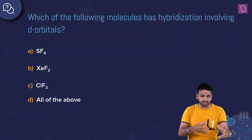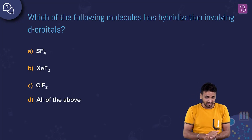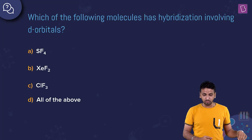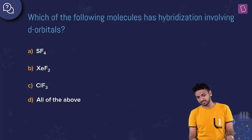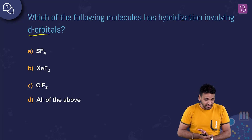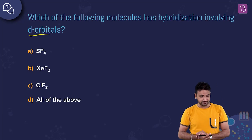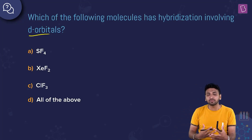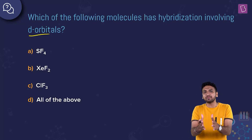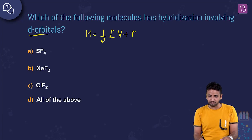We have a question from hybridization. Which of the following molecules has hybridization involving d orbitals? We are going to look for the hybridization of the central element, and we will calculate that with the formula: one by two times (v plus m minus c plus a).